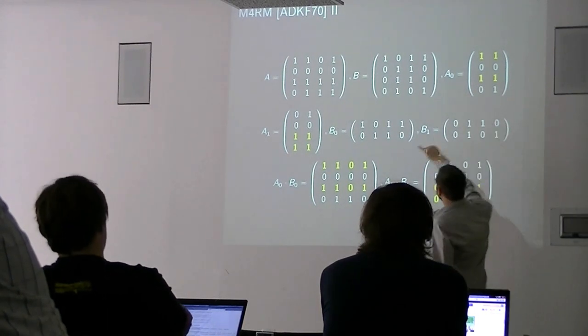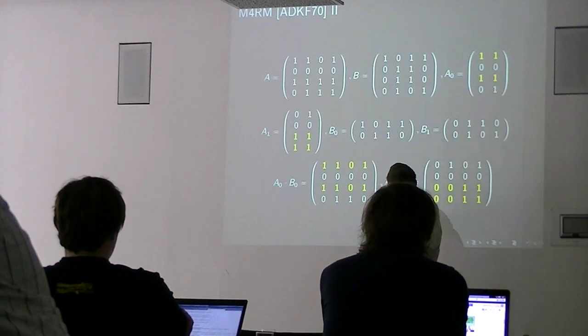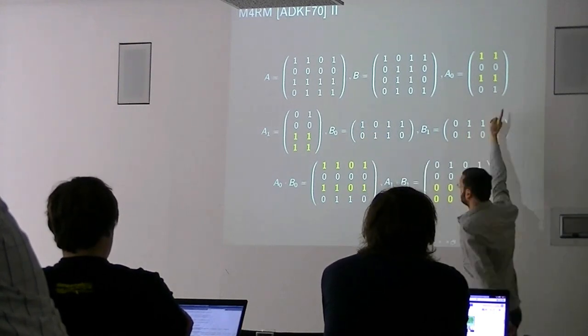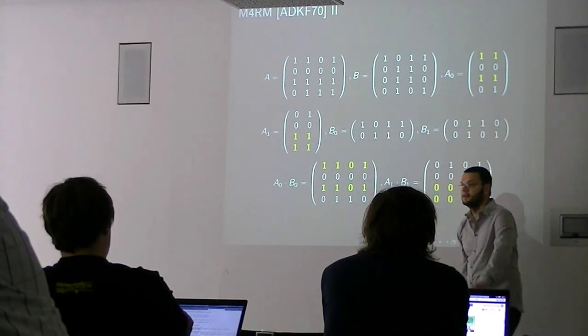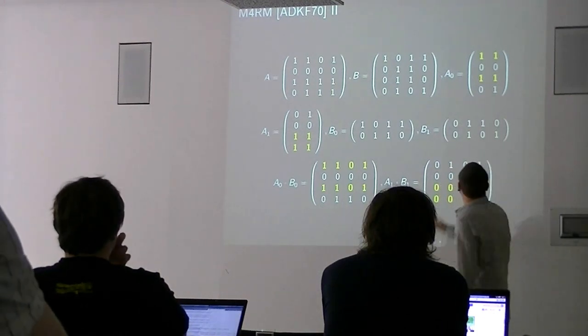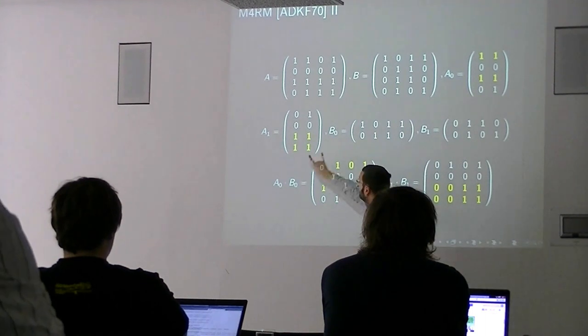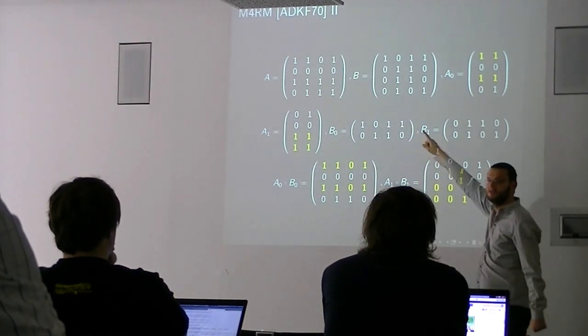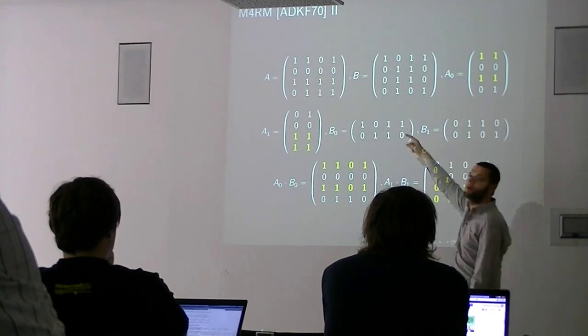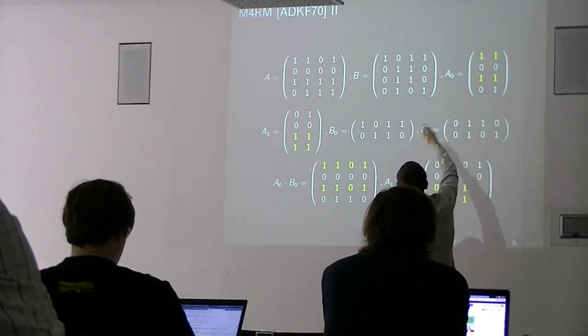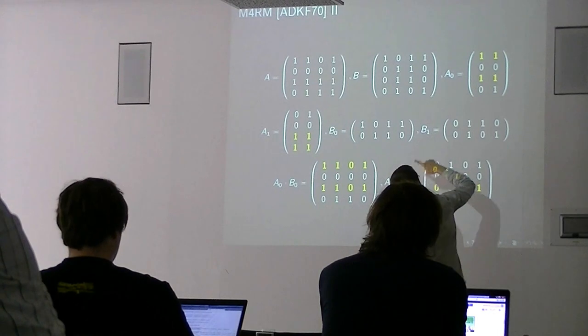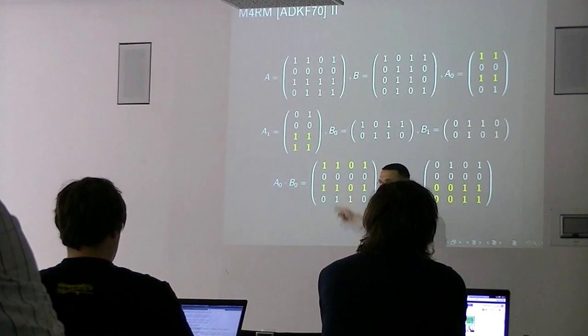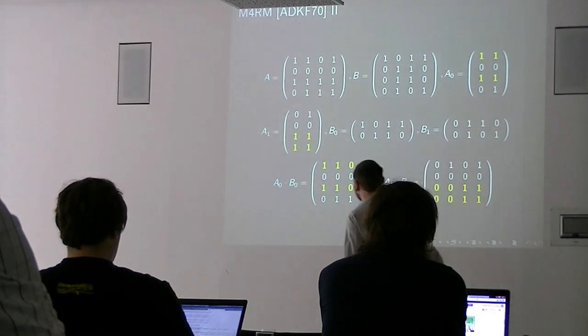So this is A, this is B, and we subdivide A into two column stripes and B into two row stripes. A tells you which linear combination of B you want. The idea that emerges because we have few bits is we can simply write a table of all possible combinations, so we don't keep adding them, but we only add once. We construct the table of all linear combinations, and then we use A as a lookup that tells us which row of the table we want to add. That's all.